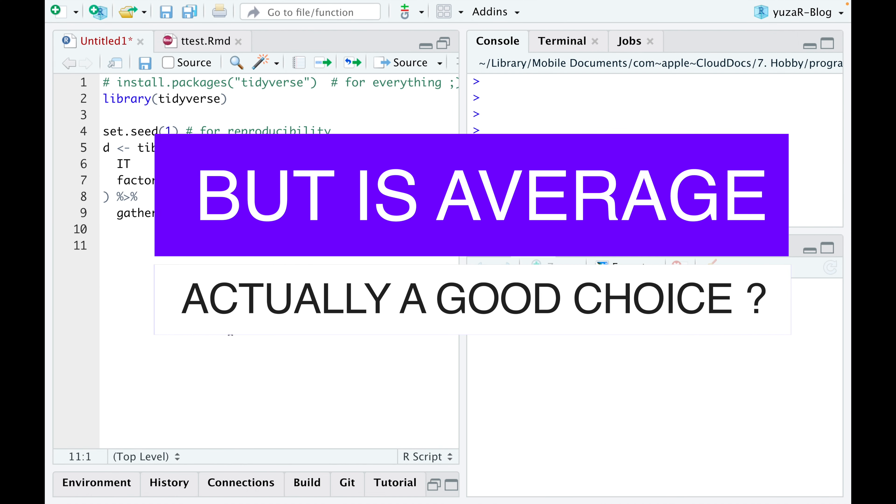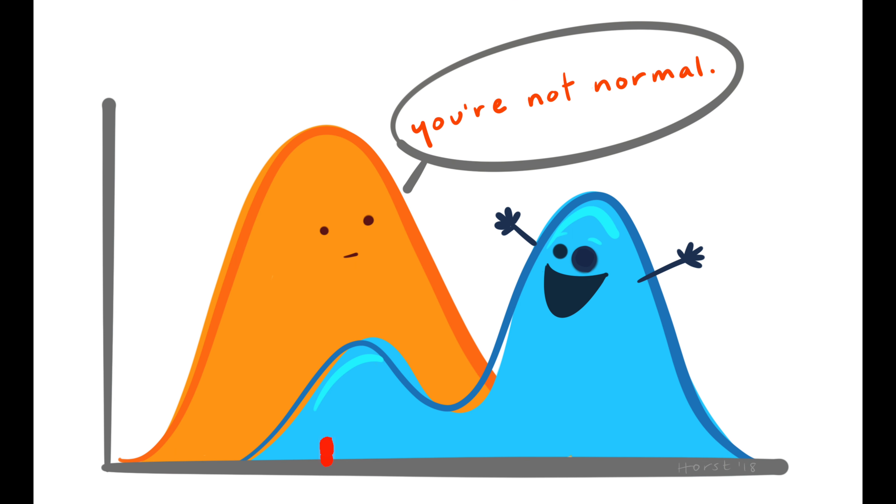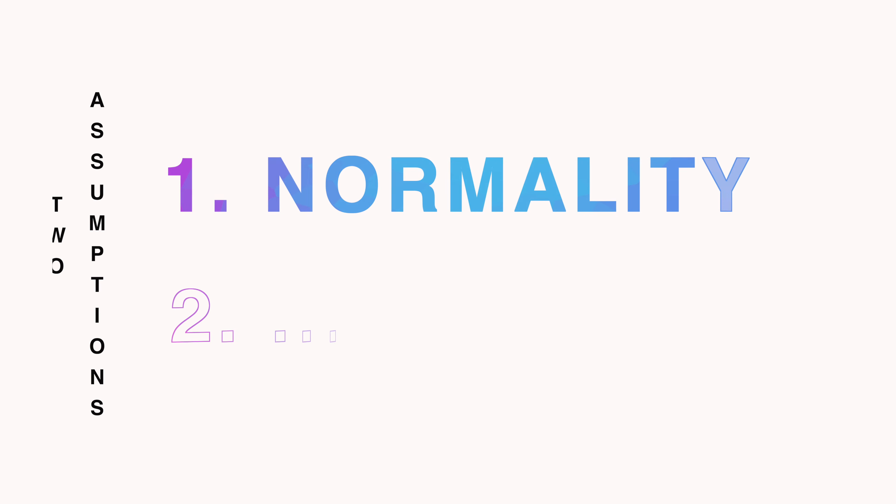But is average actually a good choice? That question is important because comparing averages only makes sense if the data is normally distributed, while if data is not normally distributed, an average would not represent our data well. So, it's obvious that we need to check for normality.